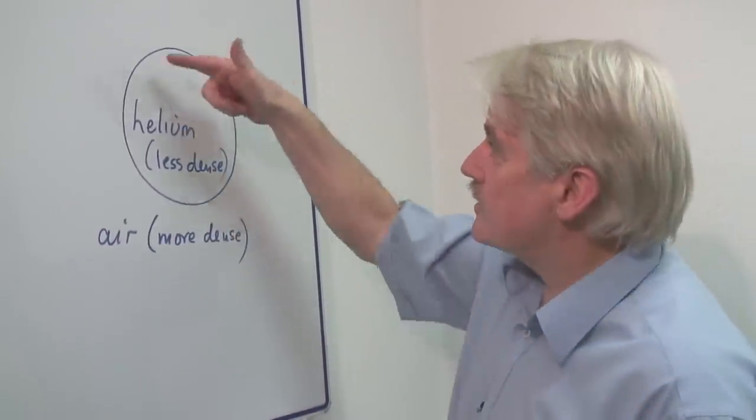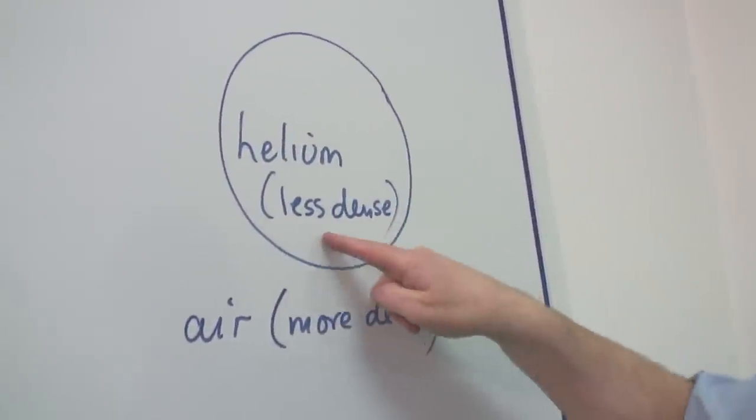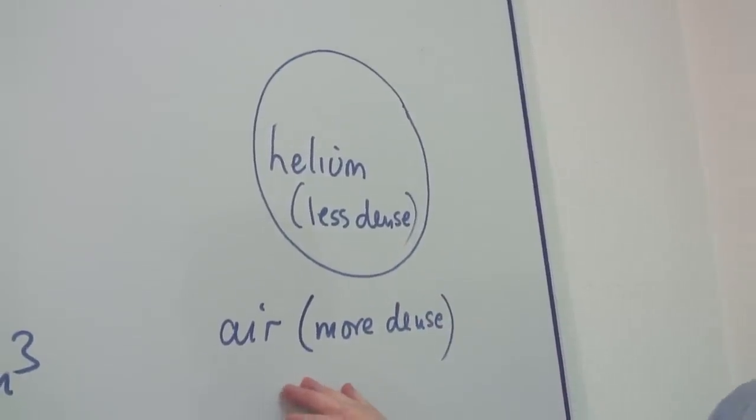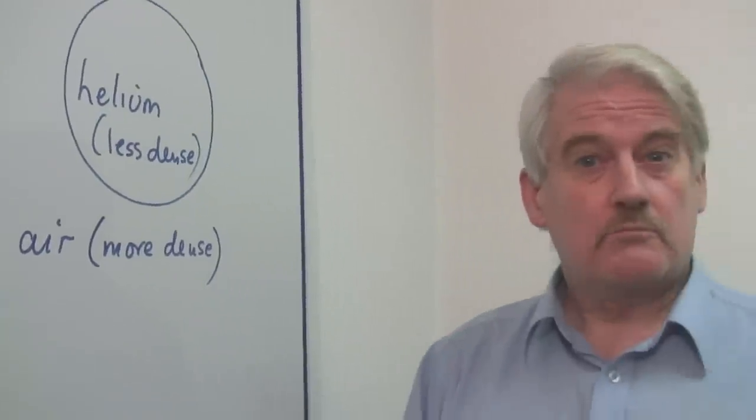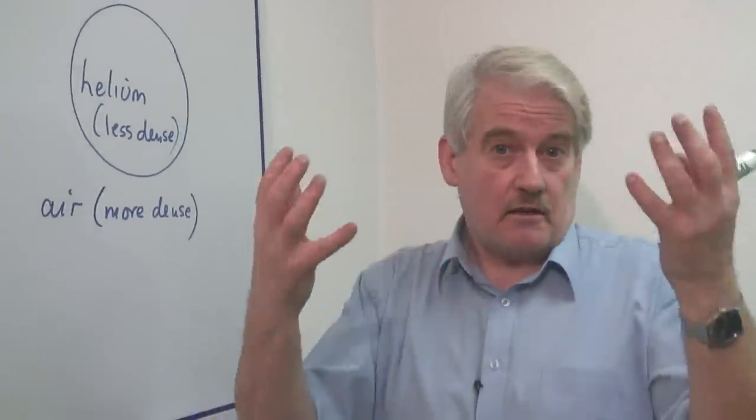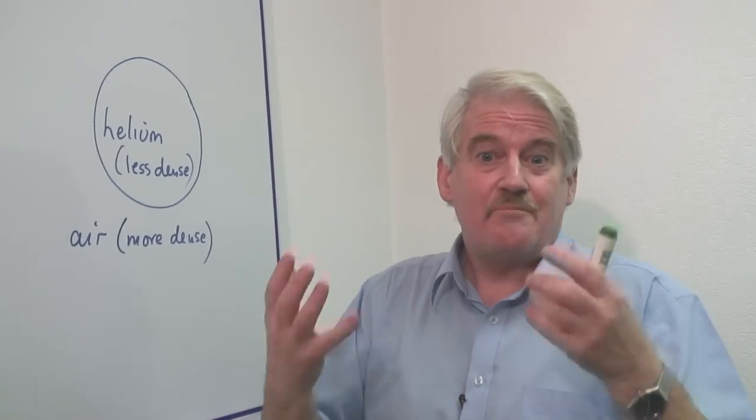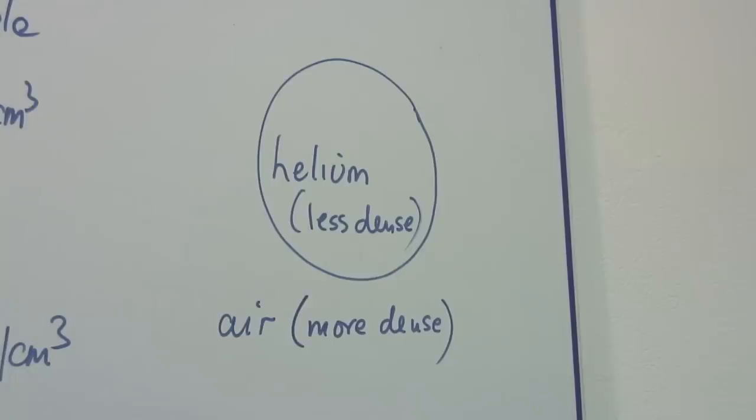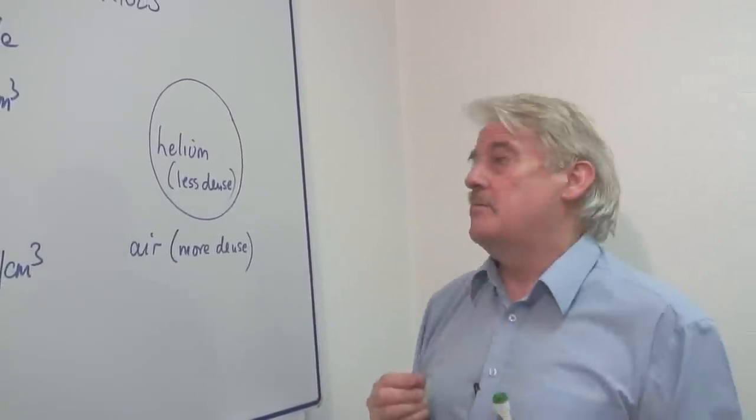So the weight of this object is less because helium is less dense than air. Air contains oxygen and nitrogen. These are big molecules, and they take a lot of space, but they also are much heavier. So they are much more dense than the helium molecules. Helium is a very small molecule, a very light molecule.